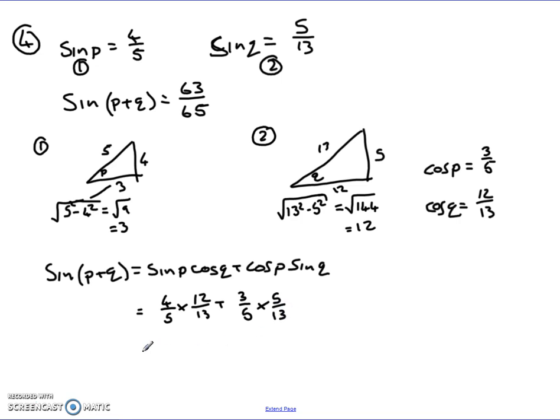And then it's just simply a case of putting them together. So I get 48 over 65 here, plus 15 over 65 here. Add those two together and you get 63 over 65.